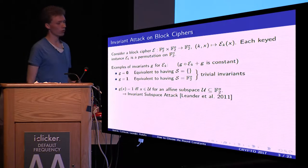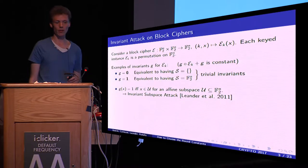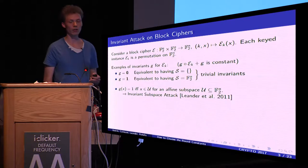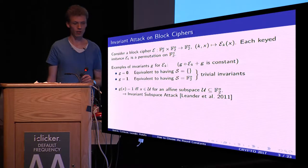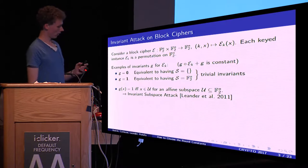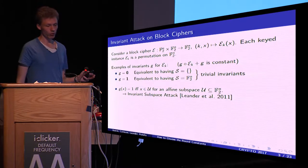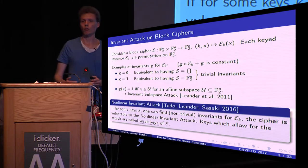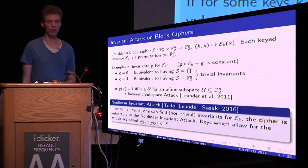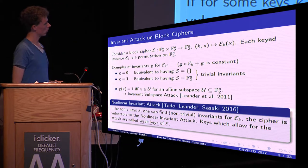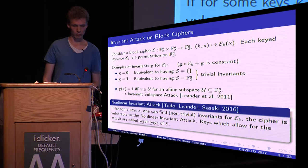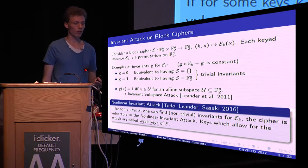Another possible case is that the invariant set S is a linear or affine subspace U. This was the first kind of invariant attack discovered, called the invariant subspace attack, presented by Leander et al. in 2011. In the general case, not restricting to an affine space, we have the so-called non-linear invariant attack, presented last year at AsiaCrypt. If for some keys one can find non-trivial invariants for the keyed instance, the cipher is vulnerable, and all keys allowing this attack are called weak keys.